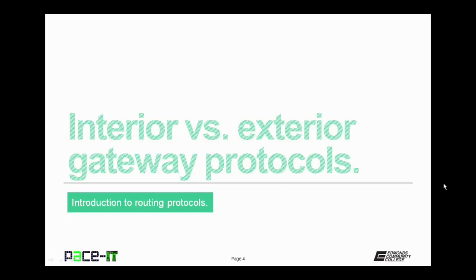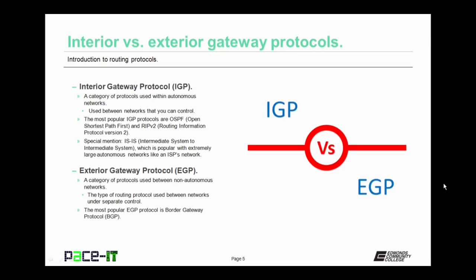Let's begin with a comparison between interior and exterior gateway protocols. Interior gateway protocols, or IGPs, are a category of protocols used within autonomous networks. Autonomous networks are networks that you control or that are under the control of a single organization. The most popular IGP protocols are OSPF, Open Shortest Path First, and RIP version 2, Routing Information Protocol version 2. There is a special mention here and that's IS-IS, Intermediate System to Intermediate System, which is popular with extremely large autonomous networks like an ISP's, or internet service provider's, network.